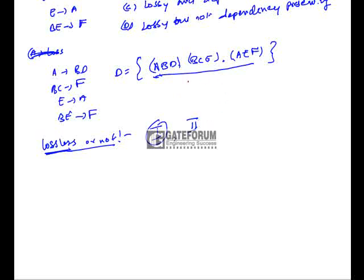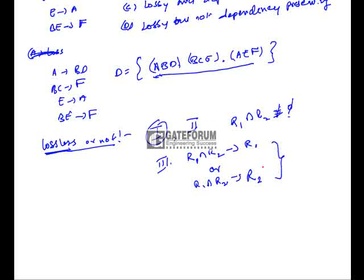The second condition is that R1 intersection R2 should not be equal to phi. The third condition is that R1 intersection R2 should derive either R1 or R2. If these conditions are satisfied, the decomposition is lossless. Taking the intersection of the first two tables: ABD intersection BCE gives B. B+ gives only B.